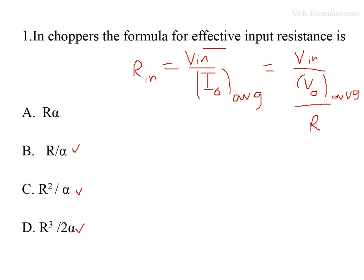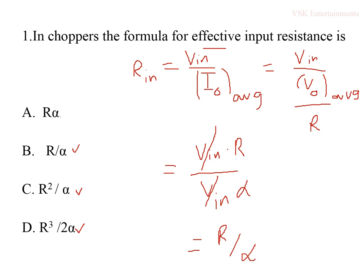We know the average output voltage in the case of choppers is Vin×α (the product of input voltage and duty cycle alpha). Substituting, Vin cancels out, so finally we get R/α. The effective input resistance is R/α, so option B is the correct answer.